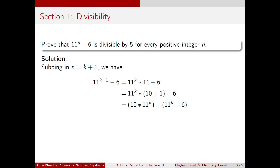Having established our base case for n equal to 1 and assumed it's true for n equal to k, we now substitute n equal to k plus 1. So 11 to the k plus 1 minus 6 is the same thing as 11 to the k times 11 minus 6. We're splitting up 11 to the k plus 1 as 11 to the k times 11, and the minus 6 remains as minus 6.